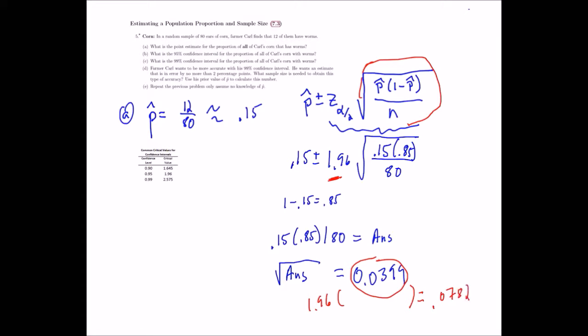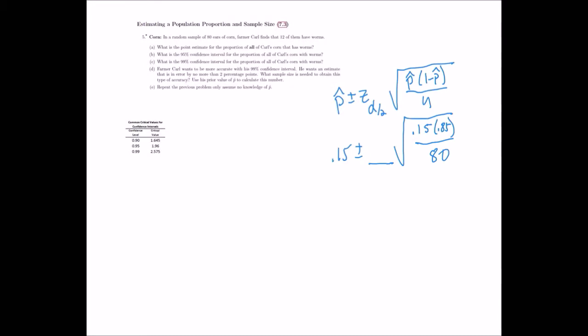So now to get my confidence interval, I'm going to take 0.15 minus 0.0782 and 0.15 plus 0.0782, and that will be my lower and upper limit. For part C, they want us to do a 99% confidence interval.